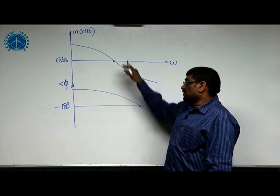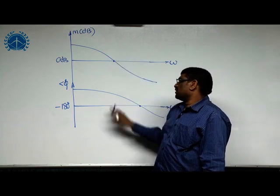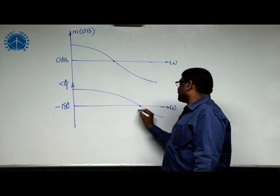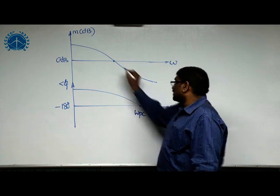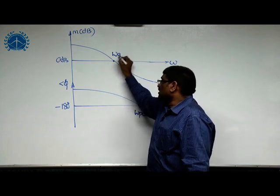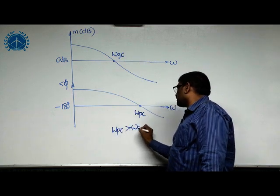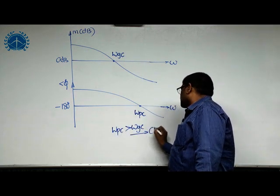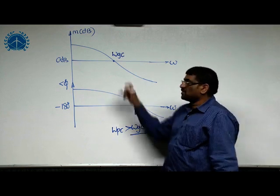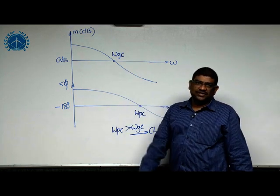For example, I will consider a stable system which has omega_pc greater than omega_gc. When omega_pc is greater than omega_gc, the closed loop system is stable. So I'm considering a stable system.